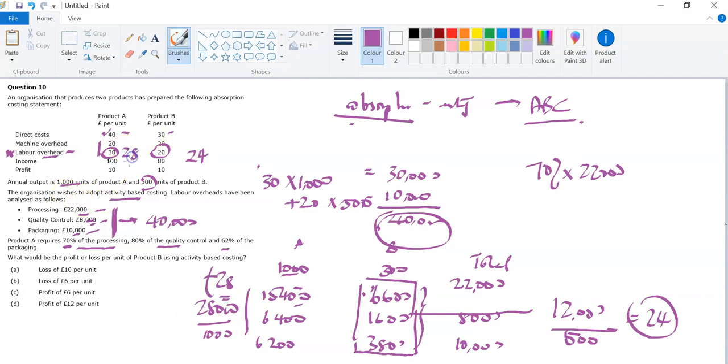The question says what would be the profit using product B? Well, I'm selling each for 80. Now I have a machine overhead of 20, labor overhead of 24, and direct costs of 30. I'm replacing this now with 24, and the machine costs were 20. Add all these together and you have 44 plus 30, which is 74. So 80 minus 74 gives you 6 pounds of profit. The answer is C, 6 pounds of profit. Great, I hope that's helped.